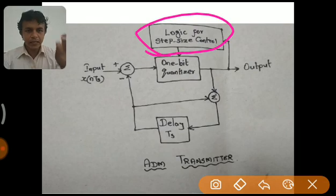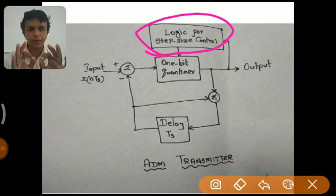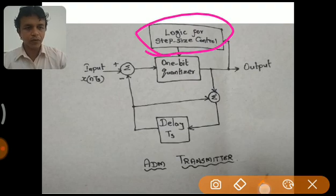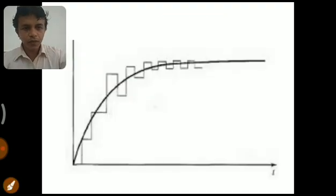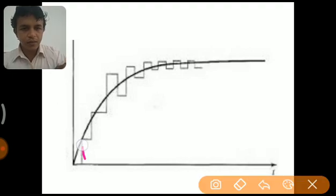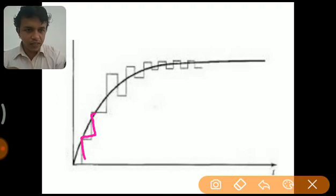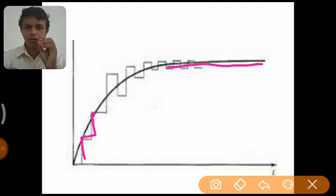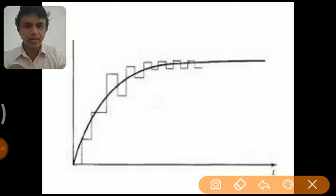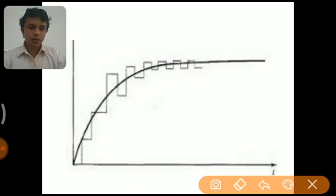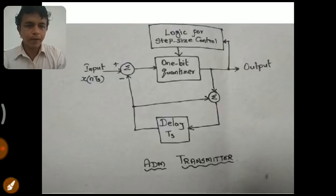The step size control block is an intelligent block that helps the adaptive delta modulation transmitter adjust the quantizing step size with respect to the input signal. If the input signal is very steep, the step size is increased. If the variation in the input signal is not so much — if the input signal is very stable — then the step size is greatly reduced. In this manner, slope overload distortion and granular noise are reduced.